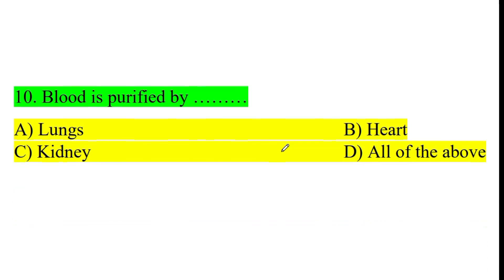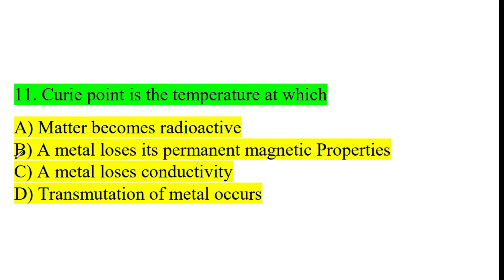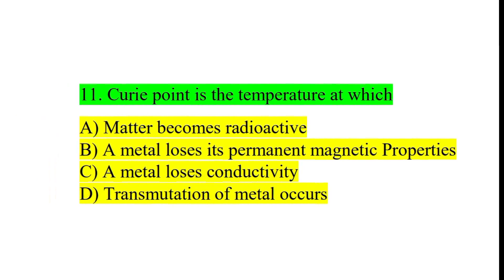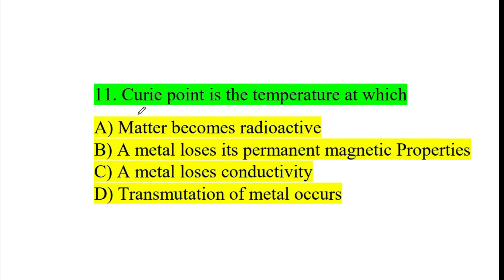Blood is purified by? The answer is option C. The curie point is the temperature at which a metal loses its permanent magnetic properties. Option B.